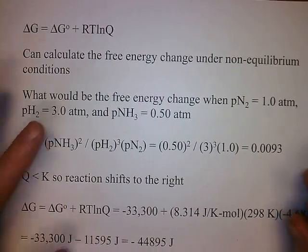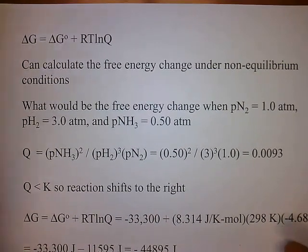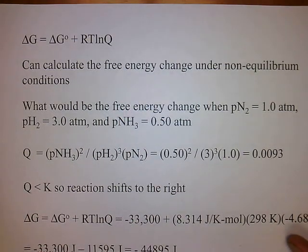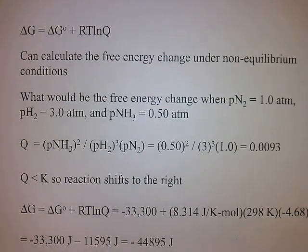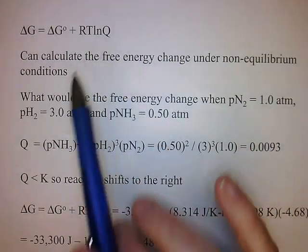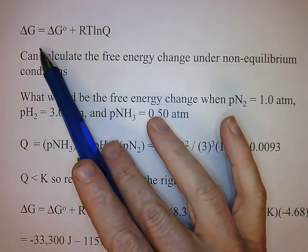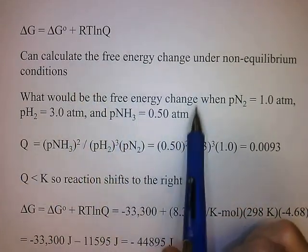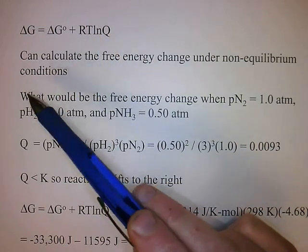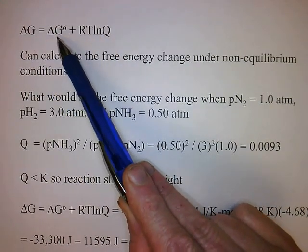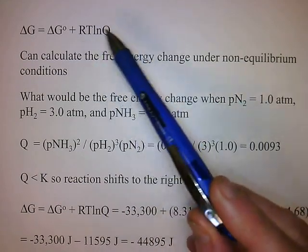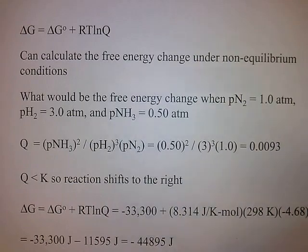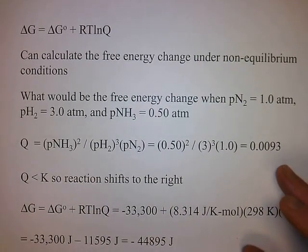We've got one more topic: what if we wanted to calculate the free energy change under non-equilibrium conditions? In the previous problem we solved for equilibrium conditions where delta G is zero. If delta G is not zero, we would have to calculate the free energy change for non-standard conditions from this equation: delta G equals the standard free energy change plus RT ln Q, where Q is what we get by plugging actual concentration data into the equilibrium expression.